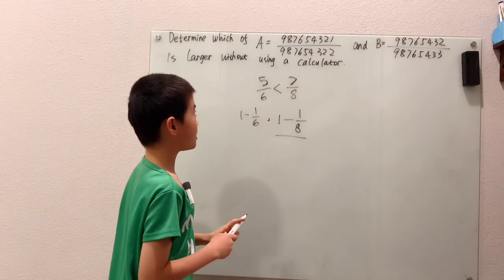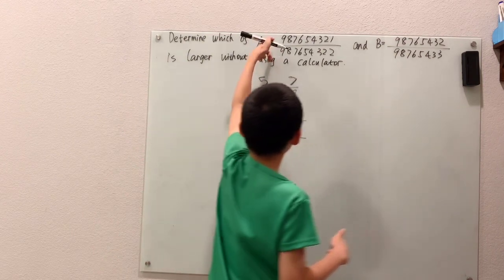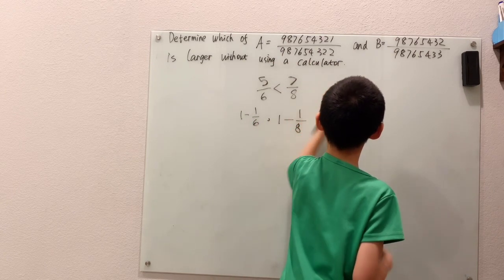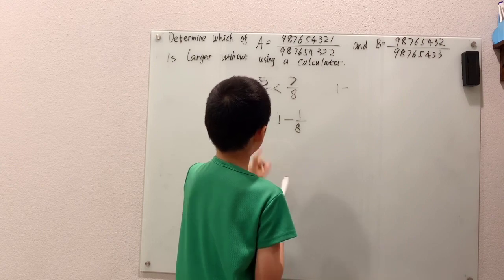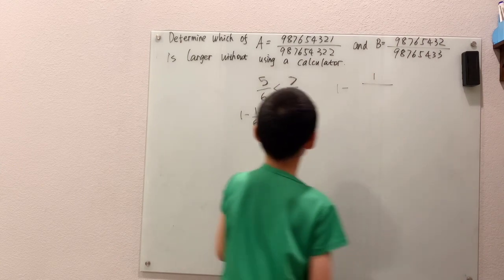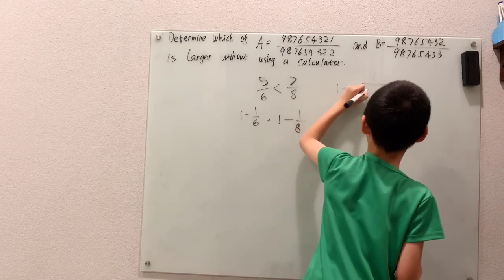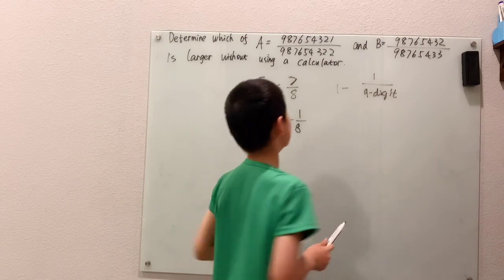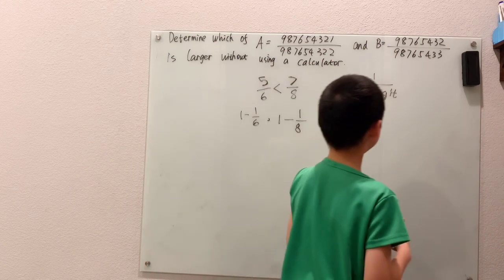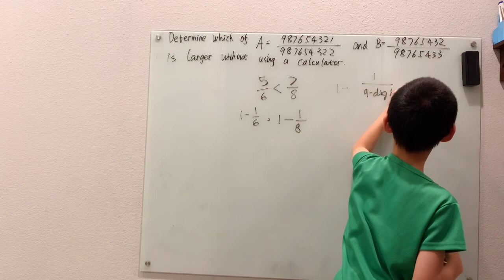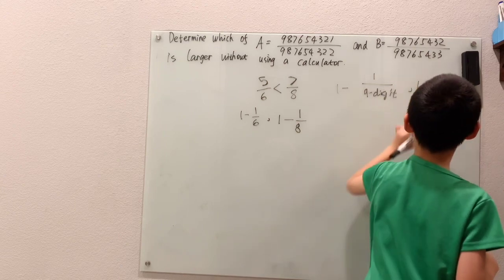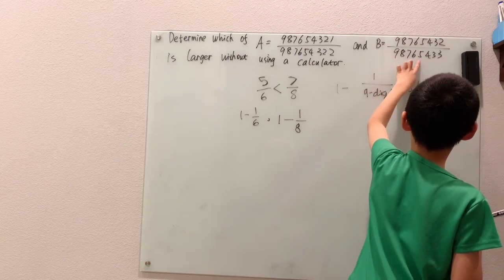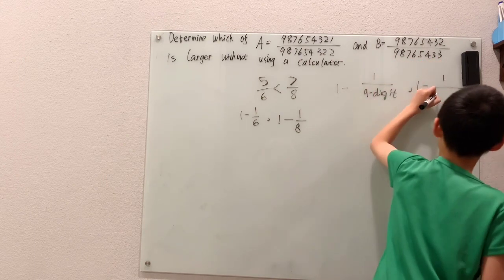We can do the same thing. So that big fraction over there is 1 minus 1 over a 9-digit number. I'm way too lazy to write all that out. Compared to B, which is 1 minus 1 over an 8-digit number.